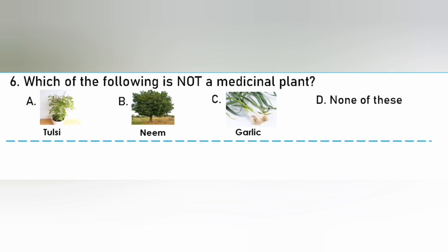Which of the following is not a medicinal plant? Tulsi, Neem, Garlic, None of these. All plants are medicinal plants, so the answer is D. None of these.